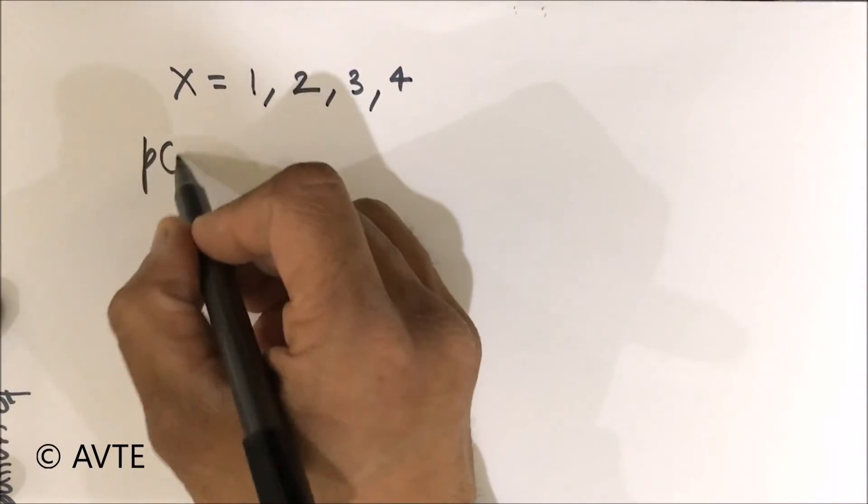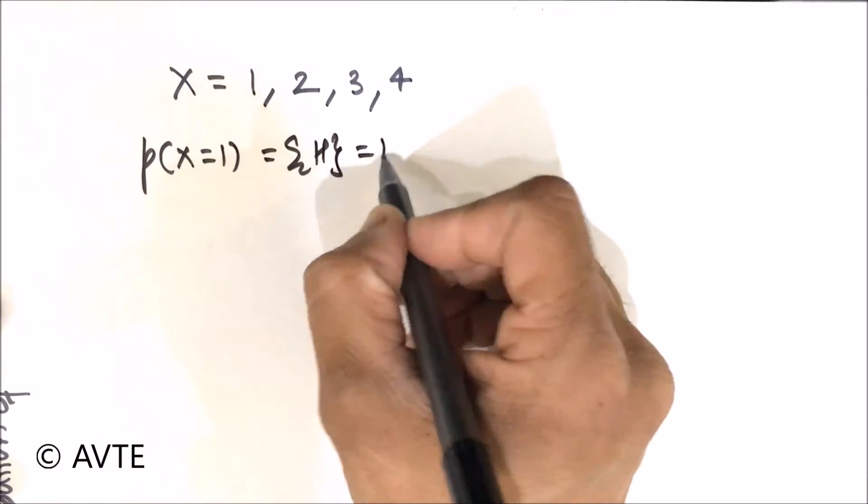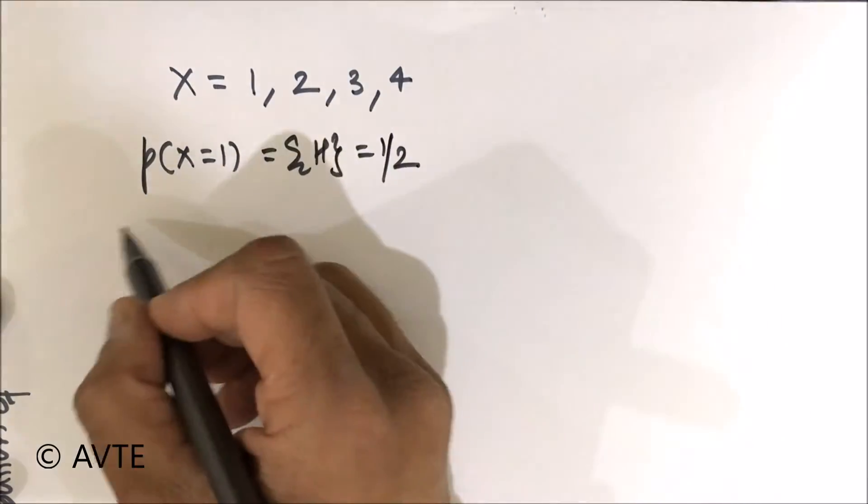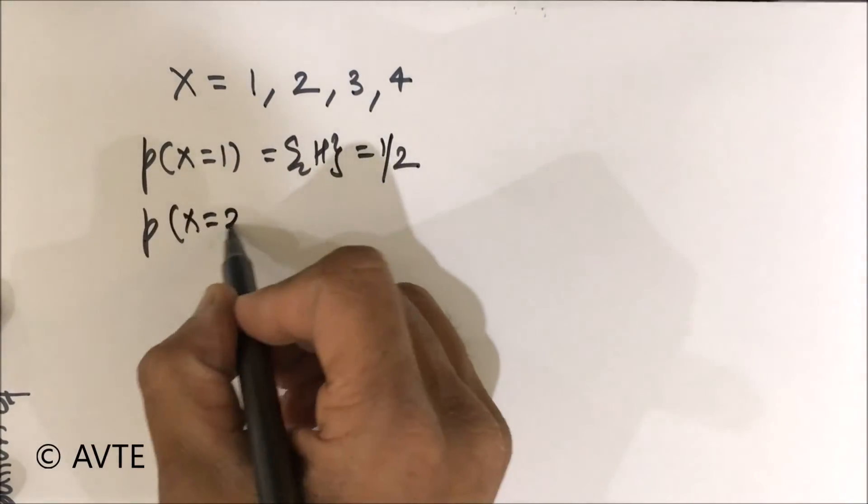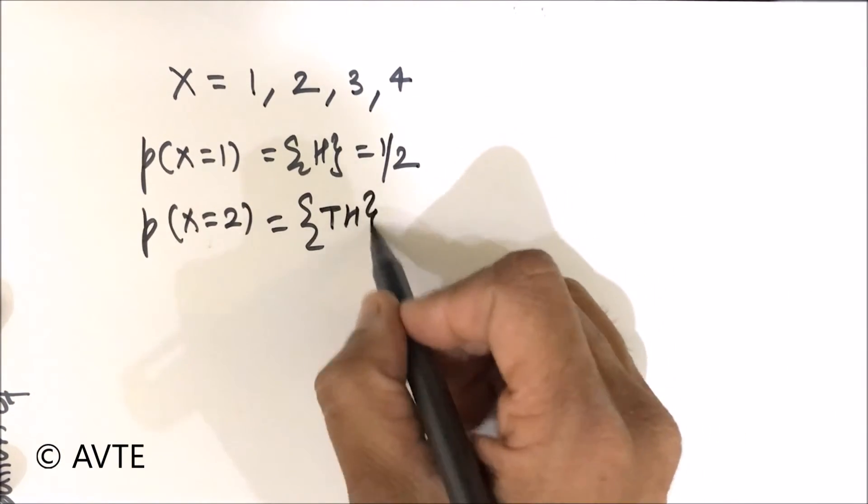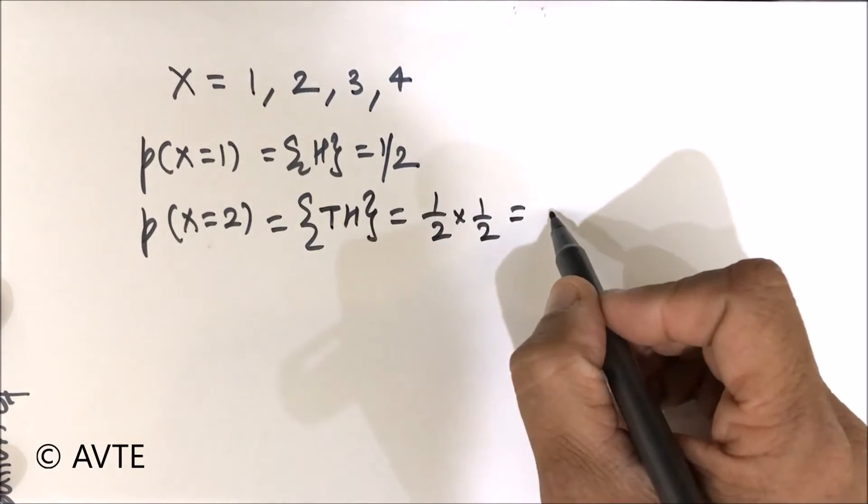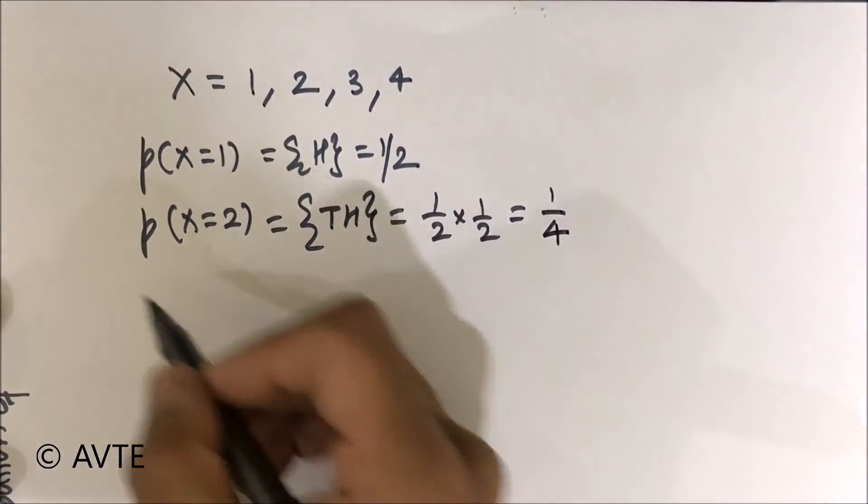You see when x is one, it is simply this case, the heads. So the probability is simply one by two. When x is two, there are two tosses possible but that will be only possible when the first one is tails and the second one is a head because as soon as you get heads, you need to quit it. So this is one by four.